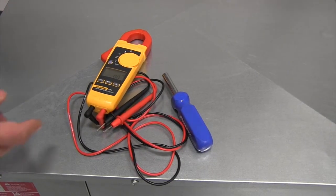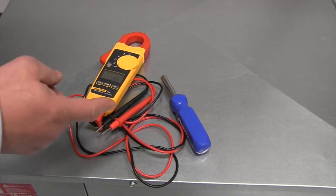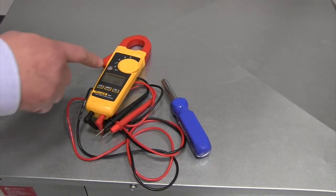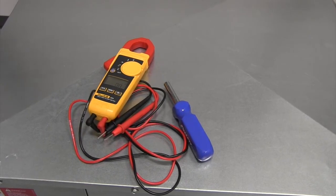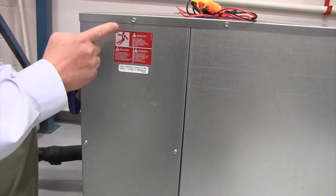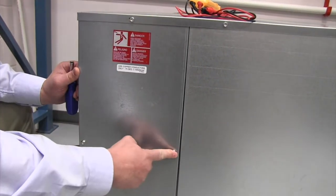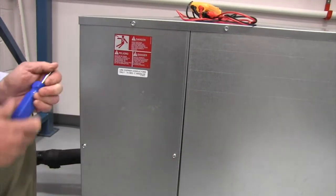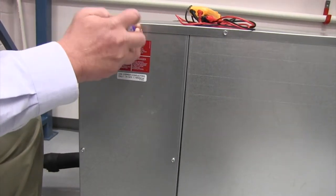For this procedure, all we're going to need in the form of tools are a 5-16th inch nut driver and our digital multimeter. We're going to start by backing out the three screws that are holding the access panel in place using our 5-16th inch nut driver.